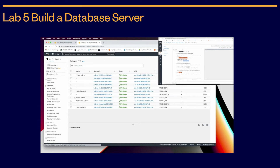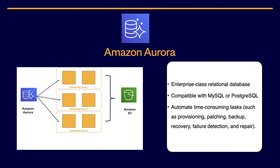Amazon Aurora is another product of AWS. Amazon Aurora is a MySQL and PostgreSQL compatible relational database that is built for the cloud. It combines the performance and availability of high-end commercial databases with the simplicity and cost-effectiveness of open source databases. You can use Amazon Aurora to reduce your database cost while improving reliability and availability. As a fully managed service, Aurora is designed to automate time-consuming tasks like provisioning, patching, backup, recovery, failure detection, and repair.